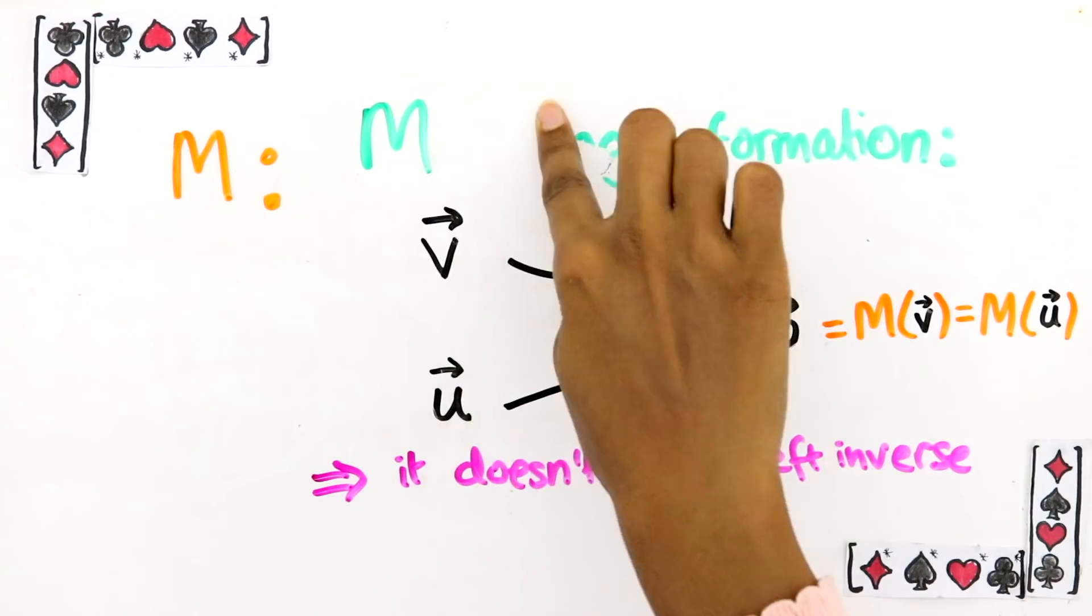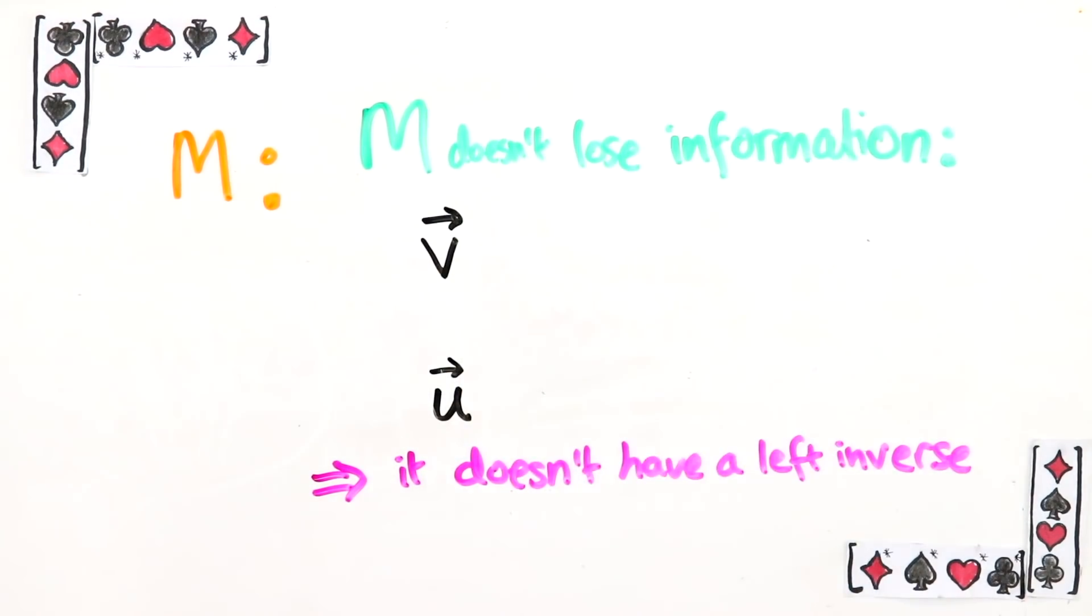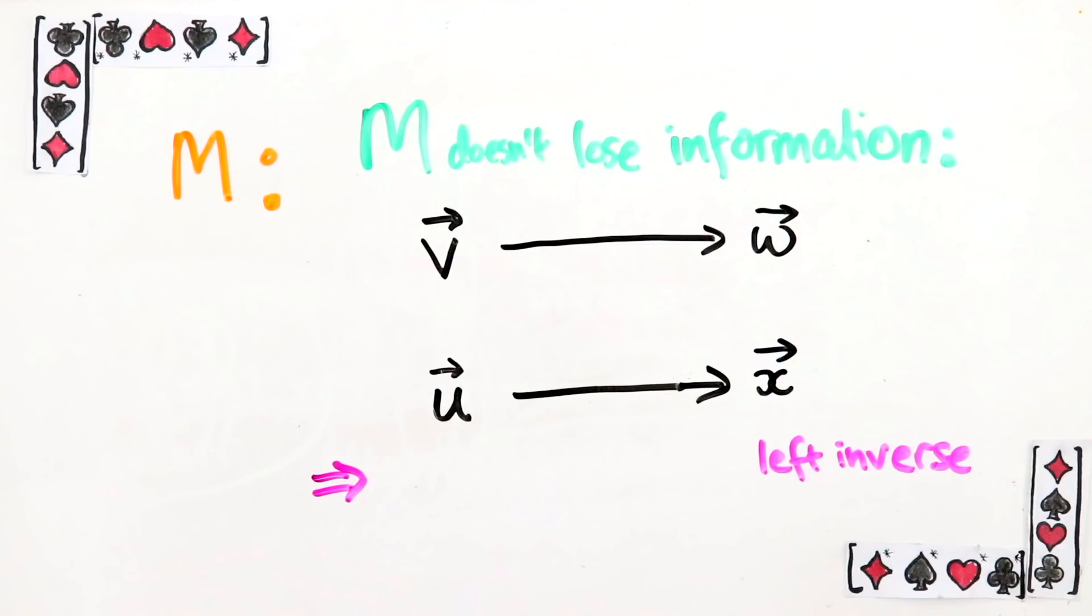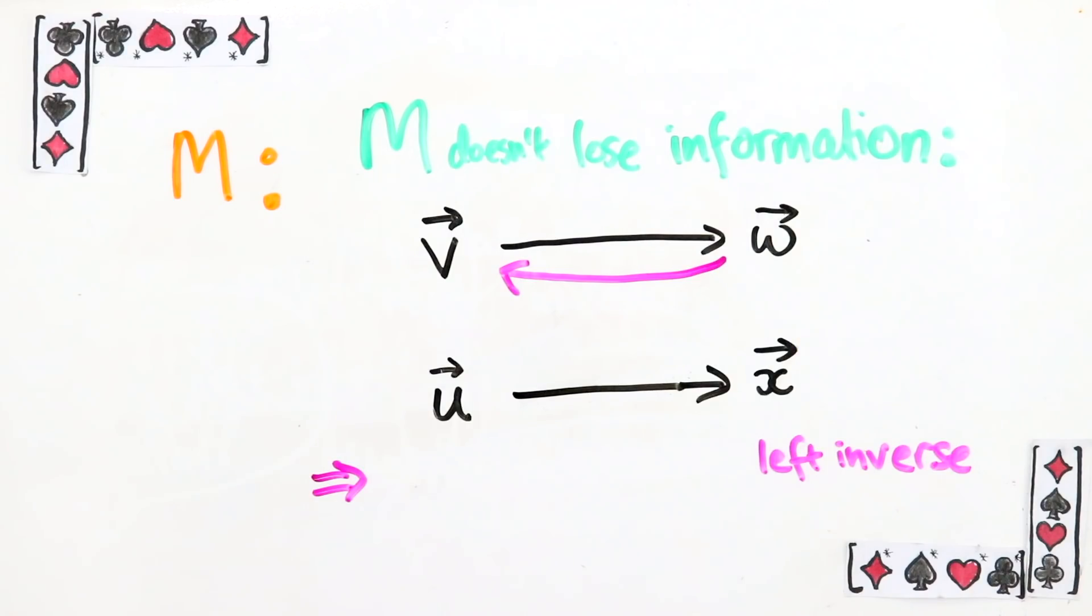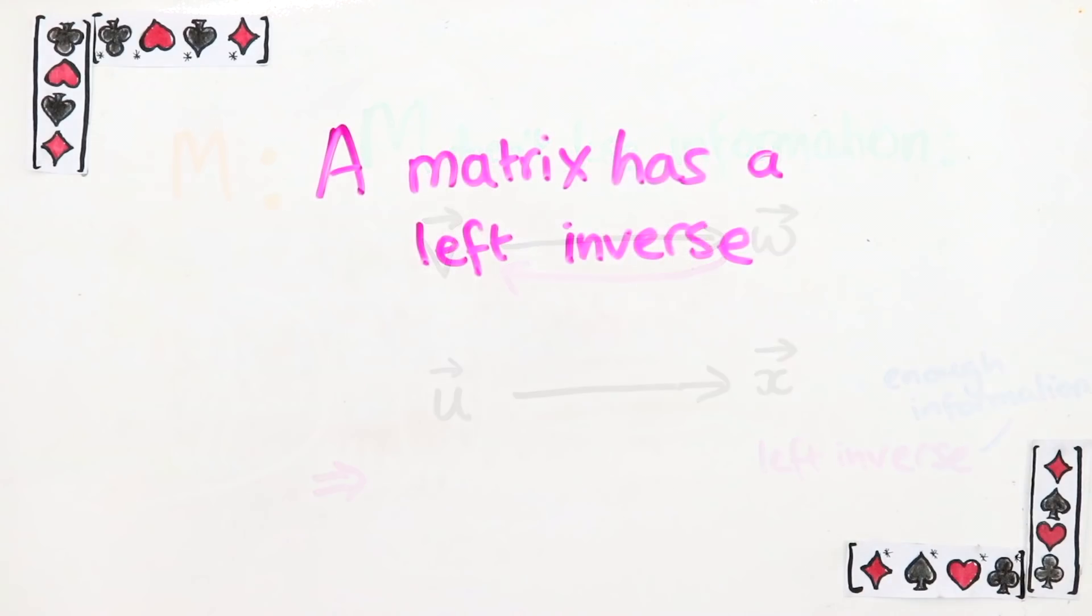But what about the other way around? If M doesn't lose information, does this mean that the left inverse exists? Well, yes, actually, because all the left inverse has to do to undo M is find the vector W came from. Since there's only one vector V it could be, there is an inverse that takes W and returns V. This doesn't mean it's easy to find out what V is necessarily, but looking at W does in principle give you enough information to undo M and return V. So a matrix has a left inverse if and only if it doesn't lose information.